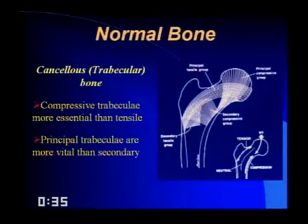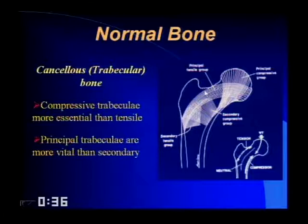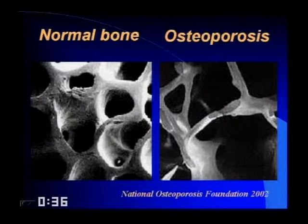For orthopedic surgeons, abnormal signal in the tensile area of a young patient with a fatigue fracture is more worrisome and may lead to prophylactic pinning. The National Osteoporosis Foundation illustrates normal bone versus osteoporosis: a poverty of trabeculae. About 20 million people worldwide suffer from this, and we all experience bone mass loss with age. The WHO defines osteoporosis as a T-score at or below minus 2.5, and osteopenia as a T-score between minus 1 and minus 2.5.